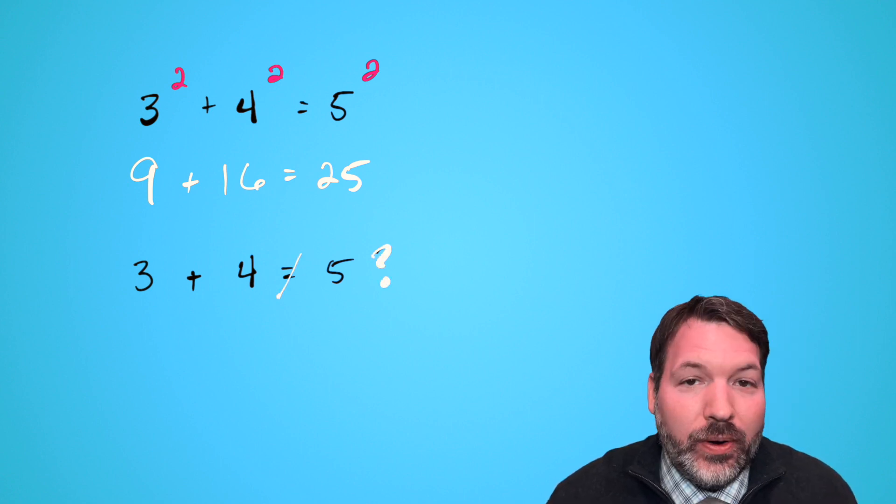Or think about it the other direction. There are lots of squares that add up to another square. 3² + 4² = 5², for example, is a true statement. 3² is 9, 4² is 16, and 9 + 16 = 25, which is 5². But is it also true to say 3 + 4 = 5? No, it's not.